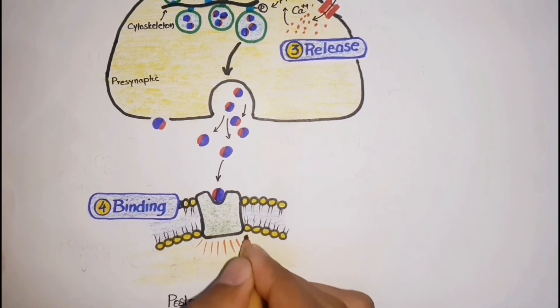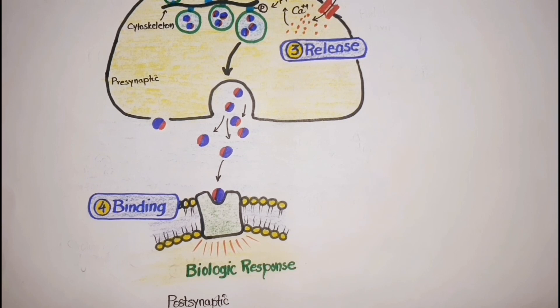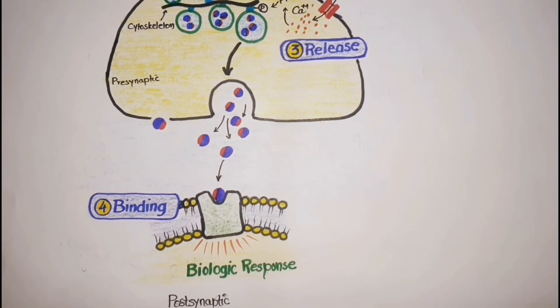Binding of acetylcholine to a receptor leads to a biological response within the cell, such as the initiation of a nerve impulse in a postganglionic fiber or activation of specific enzymes in effector cells.